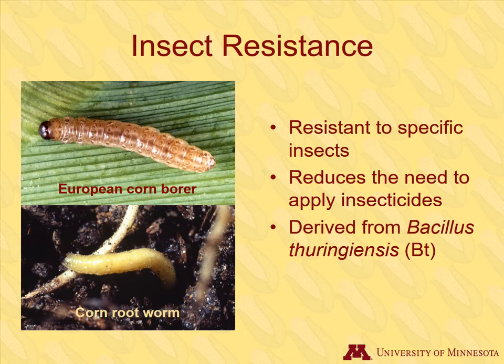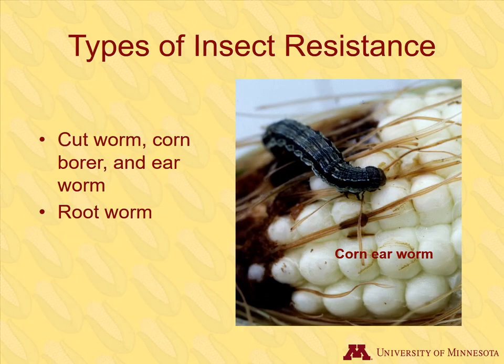The second primary type of transgenes relates to insect resistance. Insects such as rootworm, cutworm, European corn borer, and earworm can cause considerable damage to corn. They reduce yields and can even cause plants to die. When hybrids have the transgenes for insect resistance, it reduces the need to apply insecticides for those pests. These transgenes are derived from a bacterium called Bacillus thuringiensis, and corn with this trait is called BT corn for short. There are two BT traits: one controls cutworm, corn borer, and earworm, and the second type controls rootworm.